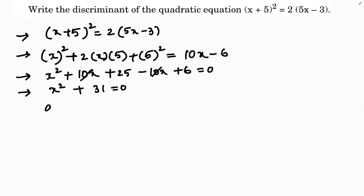Comparing with the standard form ax² + bx + c, the values are: a = 1, b = 0, and c = 31.